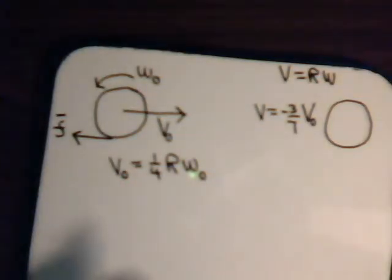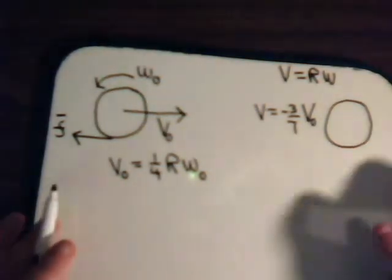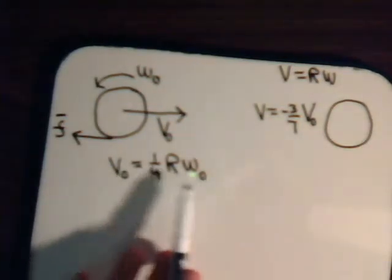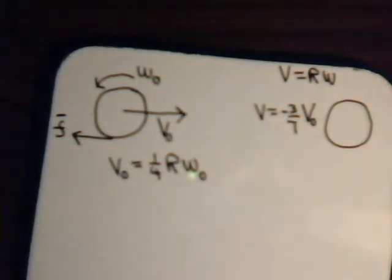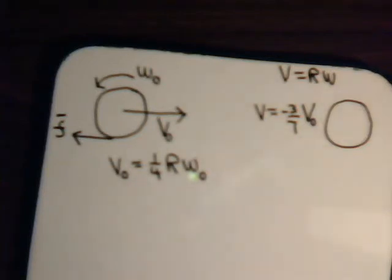In this video, we're going to continue the very same situation, but to prove this relationship we're going to use conservation of angular momentum. The setup is very familiar from previous videos in this series, starting around video 32, when we began analyzing the motion of a billiard ball.